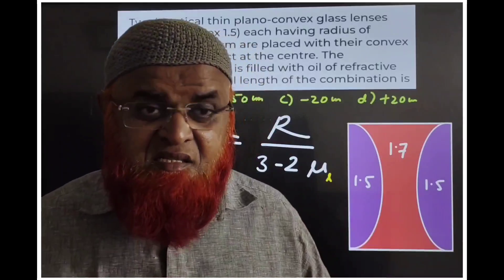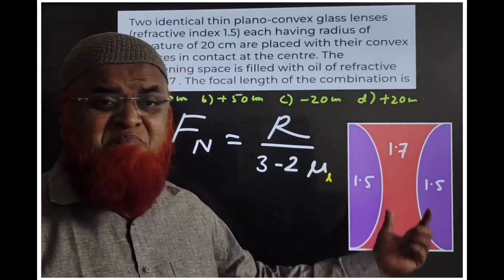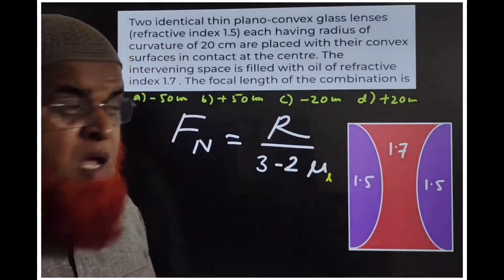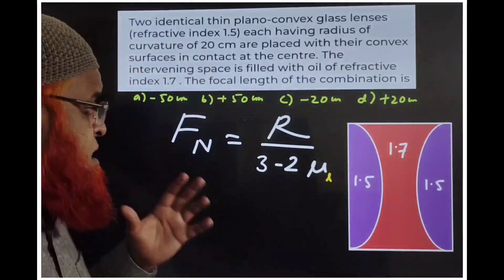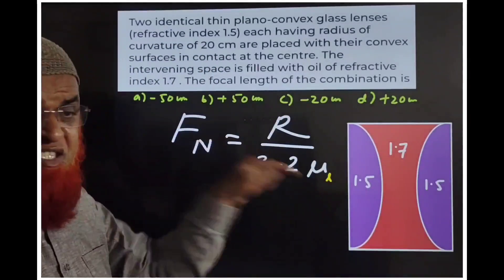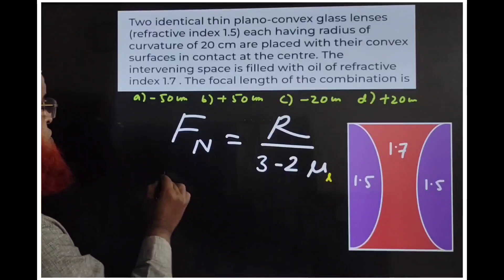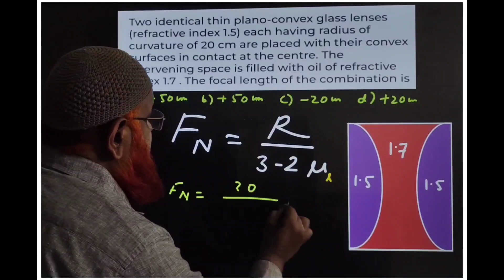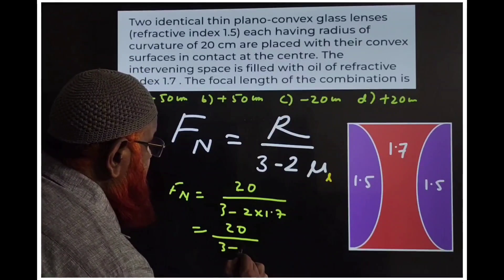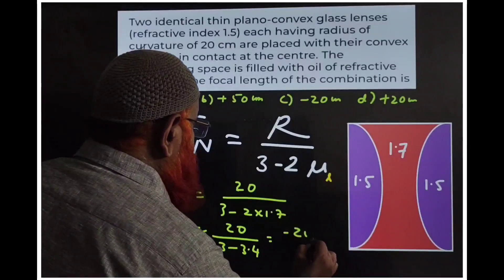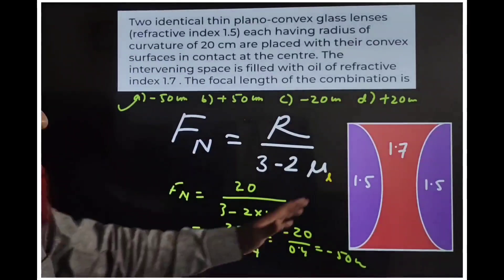Now I present a simple shortcut formula for two plano-convex glass lenses with a liquid lens in between: f_net = R / (3 − 2μ_L), where μ_L is the refractive index of the liquid. For R = 20 and μ_L = 1.7: f_net = 20 / (3 − 3.4) = 20 / (−0.4) = −50 cm. This confirms the previous answer.